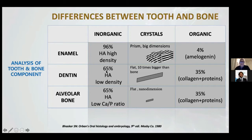But the dentine has the same quantity of inorganic parts, and the dentine is made in HA with low density. The alveolar bone has the same quantity of HA, but the dimension of the HA is flat and nano dimension — like 10 times thinner than the dentine.